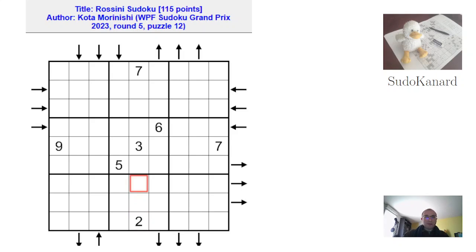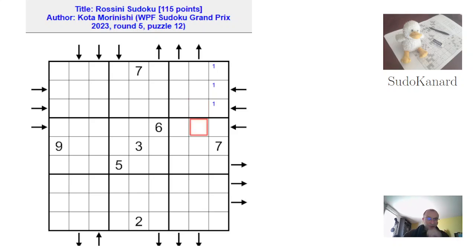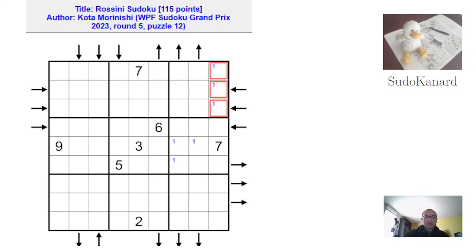Now let's begin. The first thing is that we must try to locate ones and nines. For example, in this box, where can one go? Because of this arrow, nine can't go anywhere in here, and because of this, it can't go anywhere in here. So one is in this column. One can't be here, so those digits are all different from one. Because of this, one can't be here, so the correct cells are here. Now, because of those ones, ones can't be here. Because of these, one can't be here. So one will have to be here, but because of this arrow, one is here, one is here — that's two digits placed.